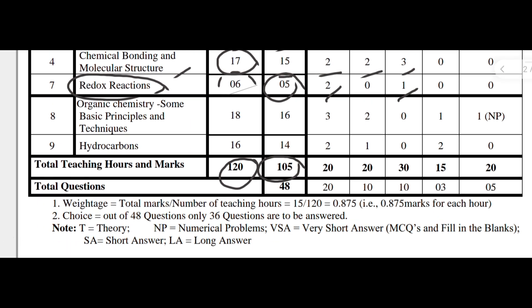Chapter 8 is 'Organic Chemistry: Some Basic Principles and Techniques,' with 18 teaching hours and 16 marks — three marks for VSA very short answers, two marks for short answers, one long answer derivation, and one numerical problem. Total is 16 marks.